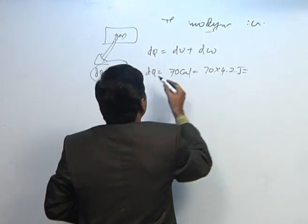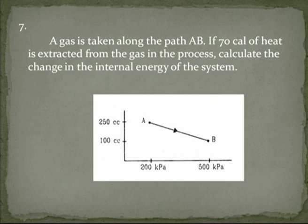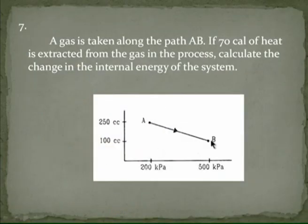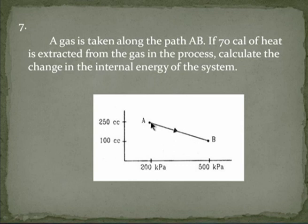To find the change in internal energy, we first find the work done. For the AB process, the area under the curve on the volume axis is taken — it is like a triangle plus a rectangular area with base 150. Substituting into DQ = DU + DW gives DU = DQ - DW. Since it is a compression process, DV is negative, so DW is also taken as negative. DQ is also negative.